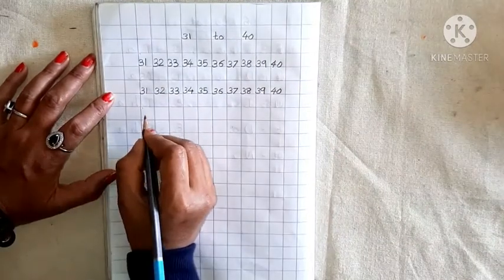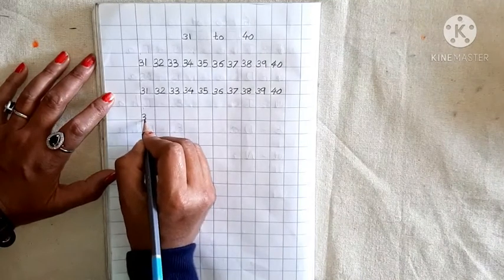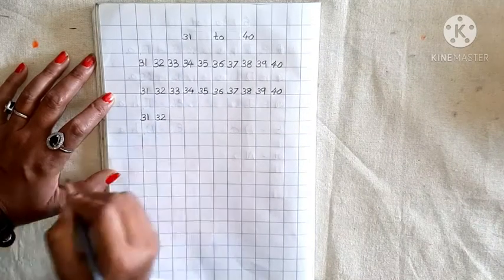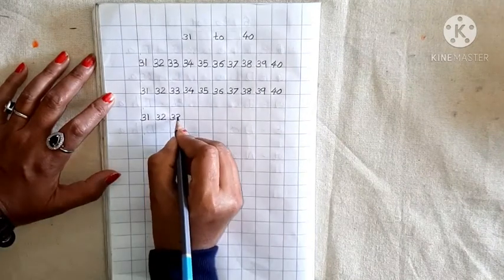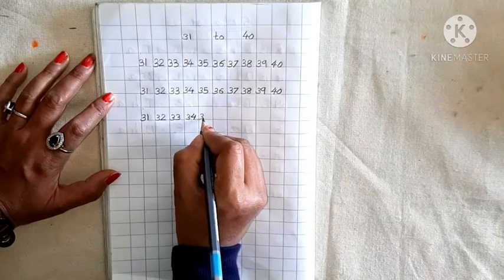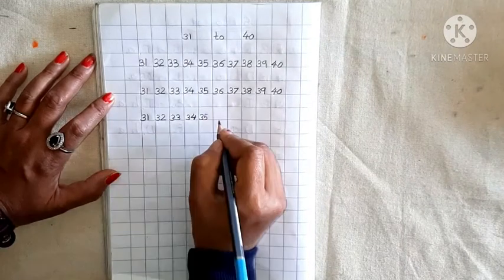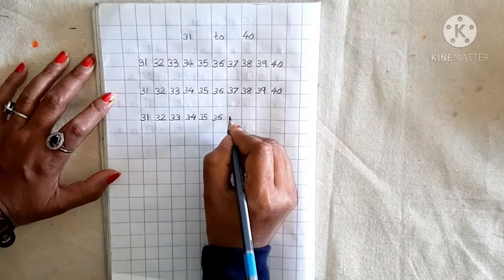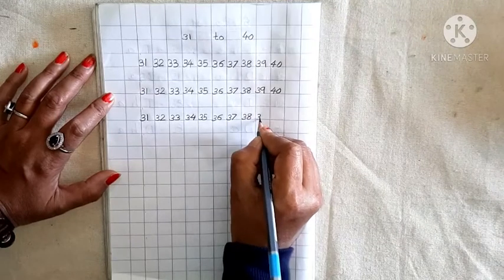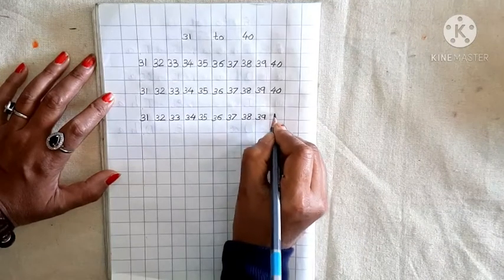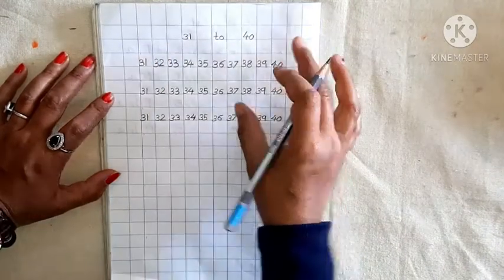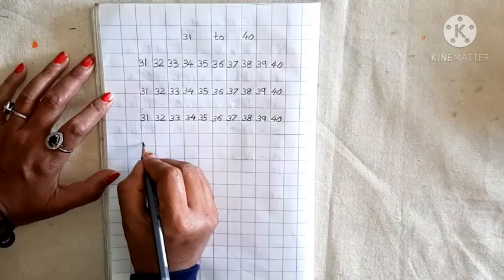Again. Leave one box and write here. 3, 1, 31. 3, 2, 32. 3, 3, 33. 3, 4, 34. Speak and write. 3, 5, 35. 3, 6, 36. 3, 7, 37. 3, 8, 38. 3, 9, 39. And 4, 0, 40. Okay? Okay? Madam ने जैसे लिखा है ना. वैसे ही आपको पूरा page write करना है.